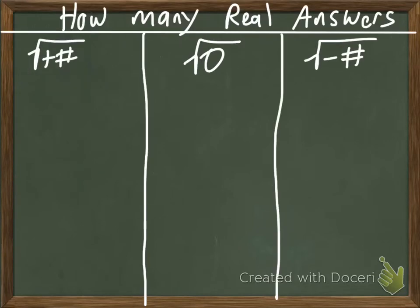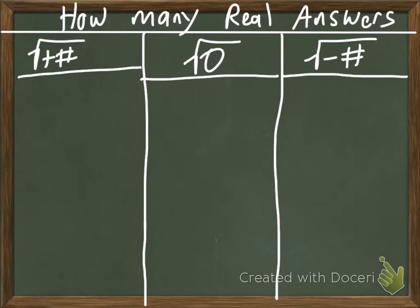So how many real answers are we going to have? We have the square root of a positive number, the square root of 0, and the square root of a negative number. In your group, play around with these — plug some numbers into a calculator or think about it — and see how many real answers each case gives. Pause the video and do that now.